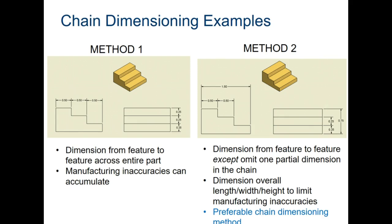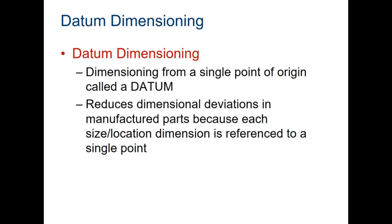We will be using instead datum dimensioning, and that is where you choose a point—it's easier to think about as an edge—but you choose a point of origin, and all of your measurements in that direction are related to that first point. One of the advantages of this is if you make a mistake in the manufacturing process, it doesn't propagate through the rest of your part. You have less error.